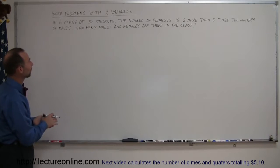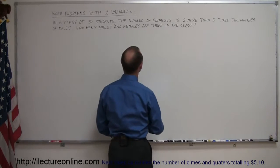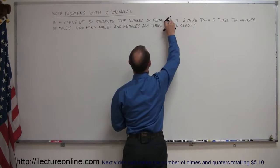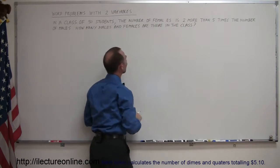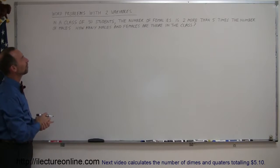It says here that in a class of 50 students, the number of females is two more than five times the number of males. How many males and females are there in the class?